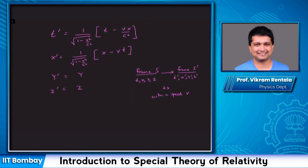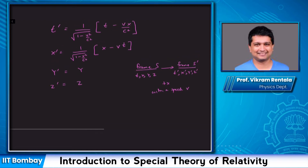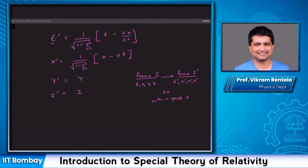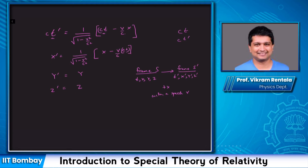Let's rewrite these Lorentz transformations in a slightly different way. Instead of t and t′, we use ct and ct′ — multiplying the equation by c. We also define a quantity beta (β = v/c). Since the relative speed between frames S and S′ is limited by c, beta ranges between −1 and +1.